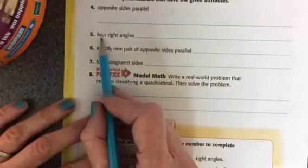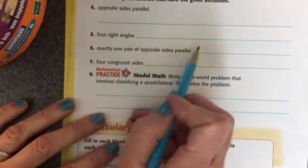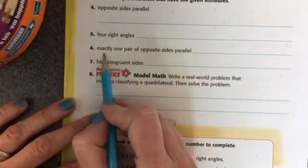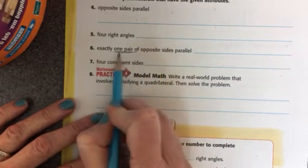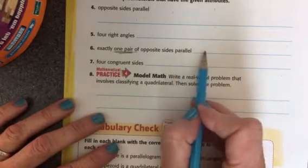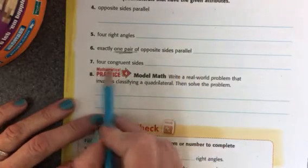Okay, which quadrilaterals have four right angles? You write those down. Which ones have exactly one pair of opposite sides parallel? Oh, only one pair of opposite sides is going to be our trapezoid, and four congruent sides. Go ahead and write those down.